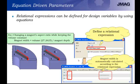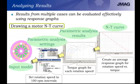Parameterized values can also be equation-driven. Relational expressions can be defined for design variables using equations. In this example, we want to change the magnet's aspect ratio while keeping the volume constant, so the magnet width is set as an equation equal to the volume — a fixed value — divided by the magnet depth. The magnet depth is the driving variable and the magnet width is the driven variable. When analyzing parametric study results, it's easy to pull everything together in JMAG — for example, drawing a motor speed-torque curve by parametrizing the speed at 100 RPM intervals and taking the average torque at each rotation speed to create a response graph.